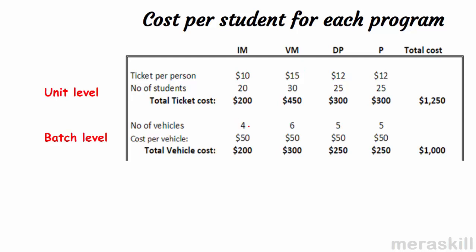Next, what about the vehicles? For 20 students, 5 students per vehicle, I needed 4 vehicles. For 30 students — 6 vehicles; for 25 students — 5 vehicles; and another 25 students — 5 vehicles. For instrumental music: 4 vehicles at 50 dollars each is 200 dollars. 6 vehicles: 300 dollars. 5 vehicles for the dance program at 50 dollars is 250. Another 5 vehicles for the play, therefore 250. The total vehicle cost was 1,000 dollars. Can I say this is batch level? The 50 dollars is for every vehicle consisting of a batch of 5. The batch size is the same here, though in production and manufacturing the batch size may not be the same.